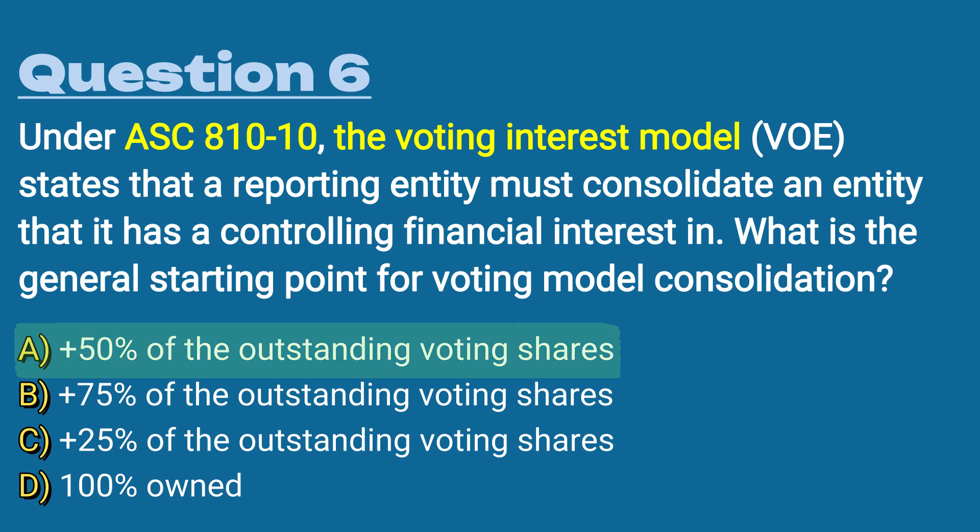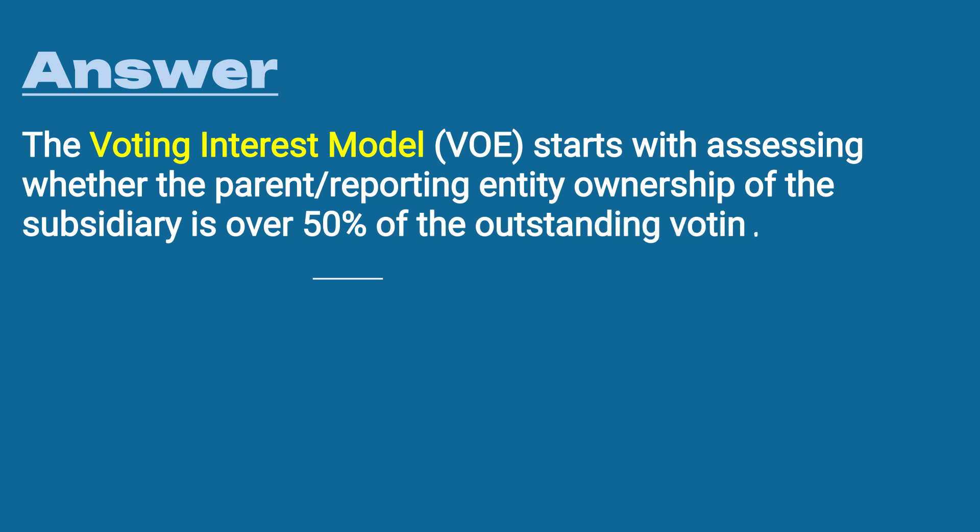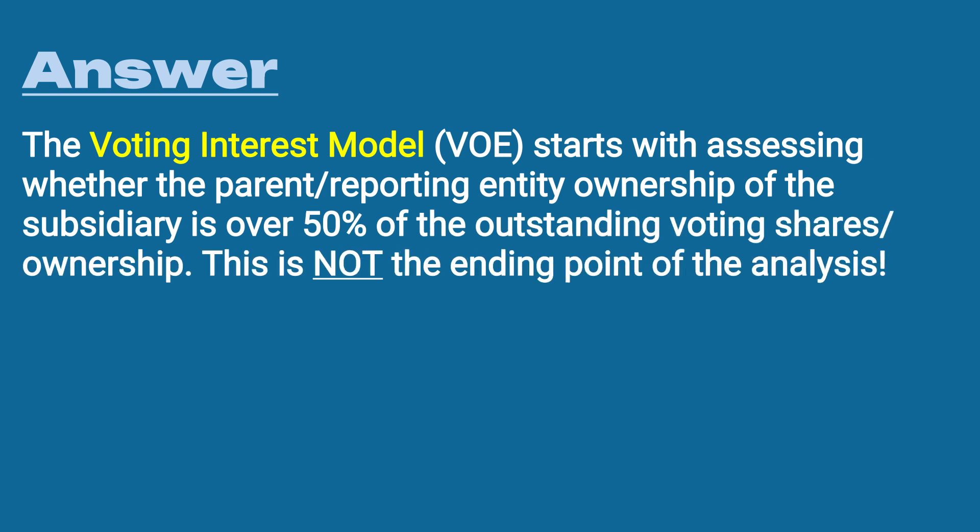The answer is A) over 50% of the outstanding voting shares. The voting interest model starts with assessing whether the parent entity's ownership of the subsidiary is over 50%. This is not the ending point of the analysis, but if a parent owns over 50% of a subsidiary, there's a good chance that subsidiary will be consolidated into the financial statements.